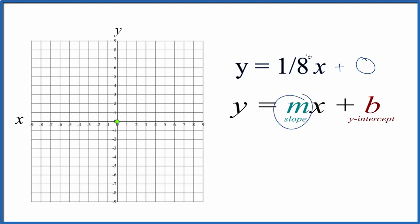For the slope, m, we have 1 eighth, and you could think of that as rise over run. So we'll rise 1 and go over 8. We go to the y-intercept, we rise 1 and we go over 8, and there's our point.